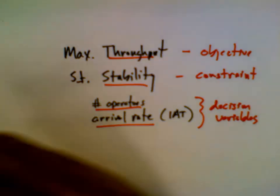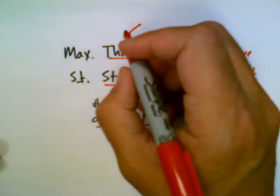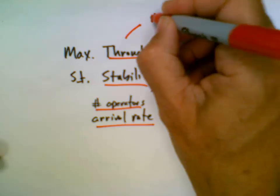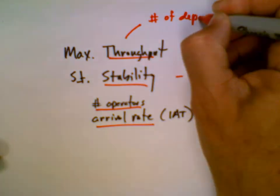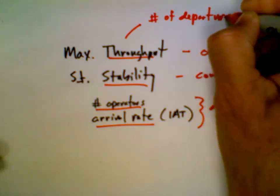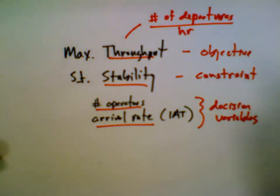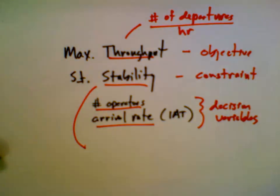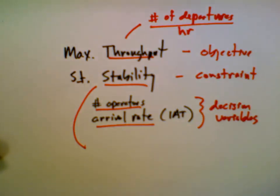The objective in this optimization is fairly straightforward. We're going to define the objective as the number of departures per hour, or per any unit time, but we'll use hours since our simulation is already set up that way. Stability is a little bit more difficult to define. We can define it in several different ways: using the WIP level, setting a target average WIP level, a target maximum WIP level, or some ratio between those two values.